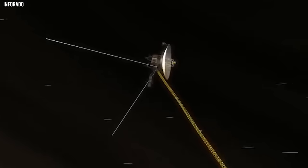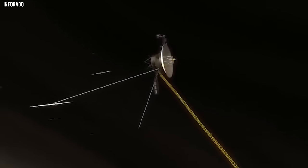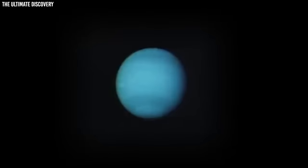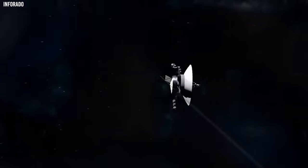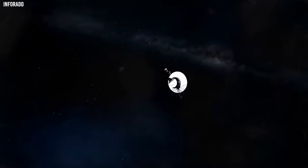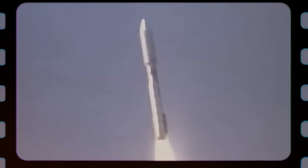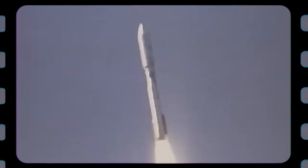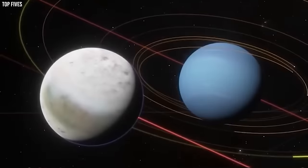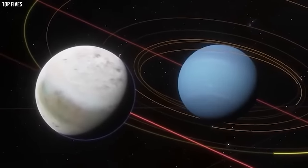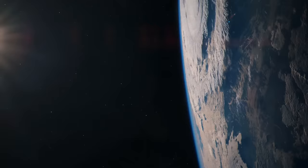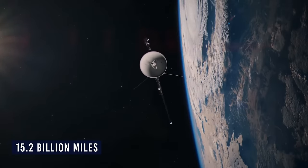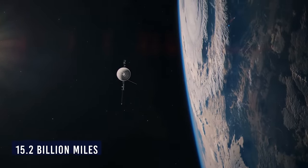As early as February 17th, 1998, Voyager 1 had already become the farthest man-made space object from Earth, overtaking NASA's Pioneer 10. By August 16th, 2006, it had travelled a distance of 9.3 billion miles, and as of today, it sits at a whopping 15.2 billion miles from Earth. Surely, you'd agree that this record-breaking space probe deserves all the attention it's getting from the scientific community.